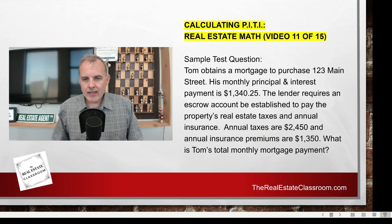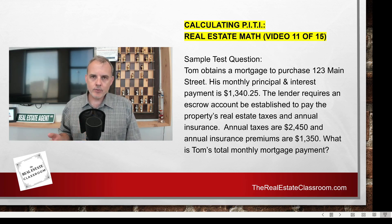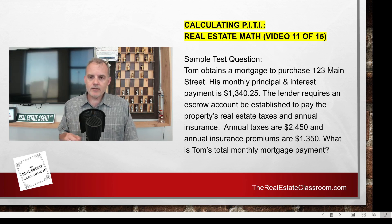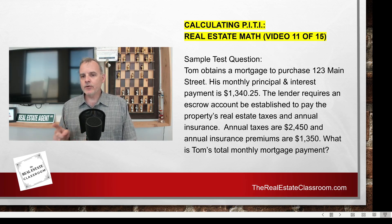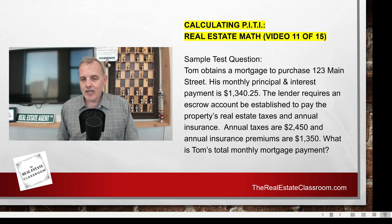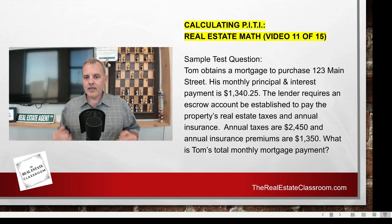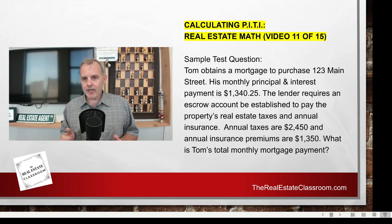The next thing I want to do is go over a sample test problem you might have on your exam. Tom obtains a mortgage to purchase 123 Main Street. His monthly principal and interest payment is $1,340.25. The lender requires an escrow account be established to pay the property's real estate taxes and annual insurance premiums. Annual taxes are $2,450 and annual insurance premiums are $1,350. What is Tom's total mortgage payment?